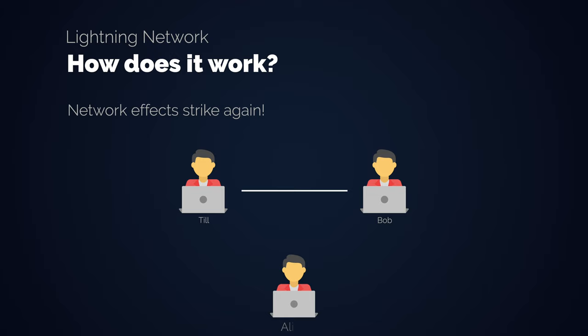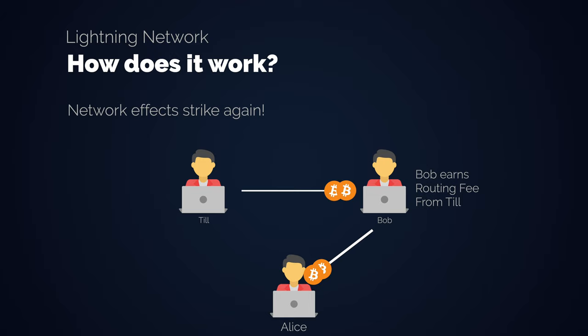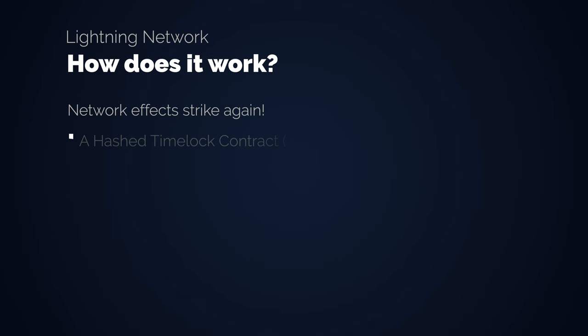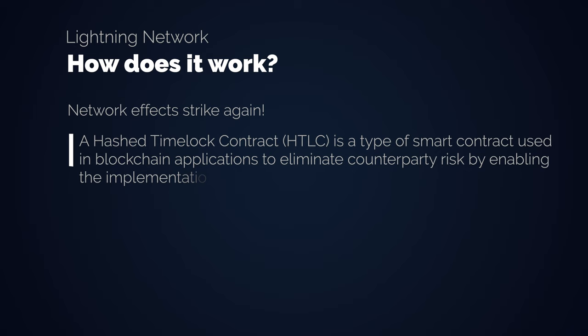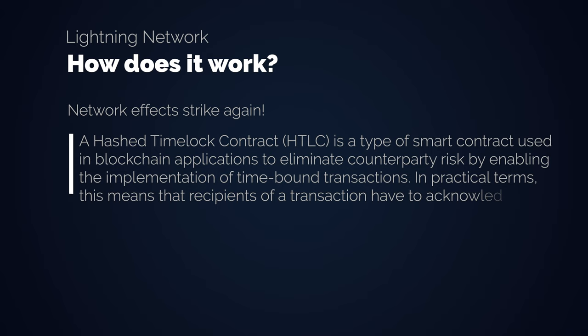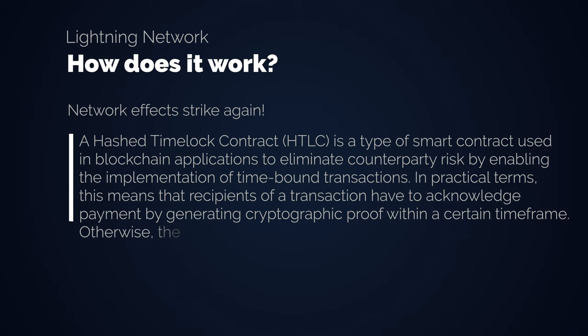You don't send your recipient the funds directly because they are locked in the channel. Instead, you tell your channel partner to send funds to your end recipient, and you give him the same amount in your payment channel with him. You also add a small fee — the so-called routing fee — so that your channel partner has an incentive to do the transaction for you. This all works under the hood without you needing to do anything and is completely trustless because of the nature of the involved hash time-locked contracts. A hash time-locked contract is a type of smart contract used in blockchain applications to eliminate counterparty risk by enabling the implementation of time-bound transactions.